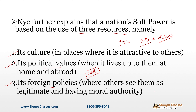तीसरा example है foreign policy. Foreign policy का best example है International Solar Alliance. India ने, considering climate change और जो problems world countries और third world countries face कर रही हैं, उसको देखते हुए India proposed the International Solar Alliance. World ने देखा कि India के पास उस चीज़ की legitimate and moral authority है, India खुद भी efforts डाल रहा है, and India is inviting the world to join — और countries की add-on बढ़ती ही चली जा रही है।